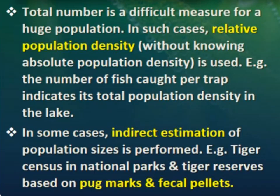In some cases, indirect estimation of population sizes is performed. For example, tiger censuses in national parks and tiger reserves are based on pug marks and fecal pellets — meaning the footmarks and fecal pellets of tigers are used to estimate the number of tigers in any national park or reserve.